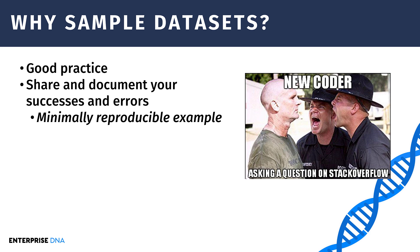It's also good practice in more than one way. If you're going to share your code, document what you've done, or if you want help, it's really a good idea to use a generally available data set to build what's called a minimally reproducible example. You're going to have a pre-bundled script that somebody else on the internet can run and help you with. Otherwise, if you do not produce these minimally reproducible examples, it's a little easy to get flamed on places like Stack Overflow, which can be a shock if you're not familiar with that.